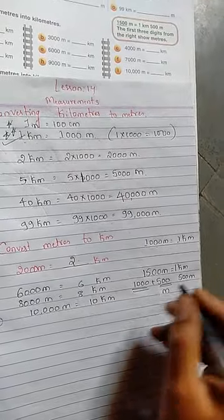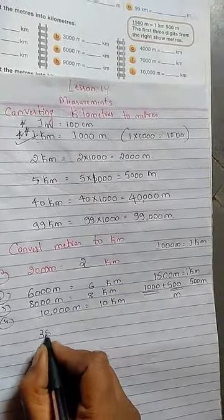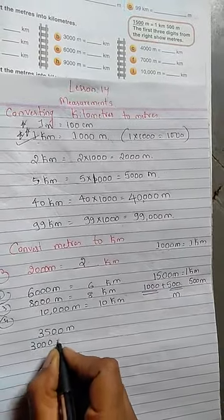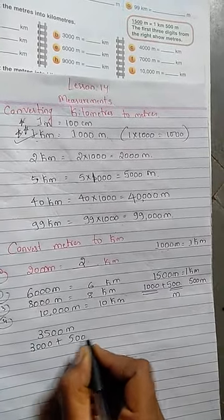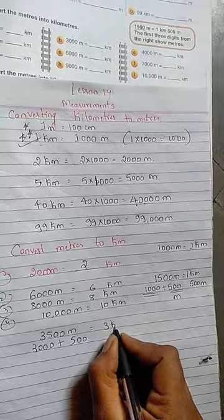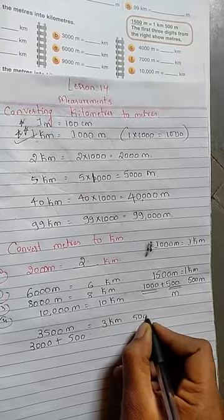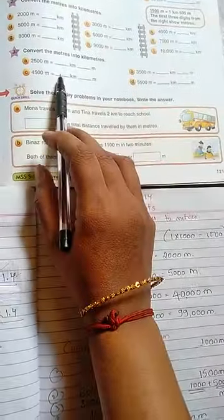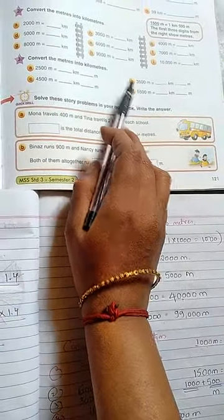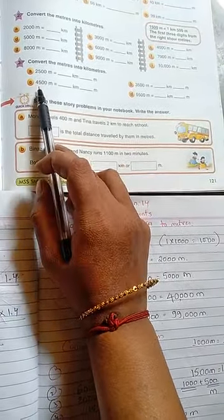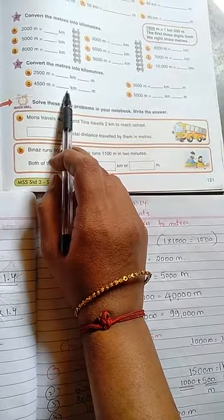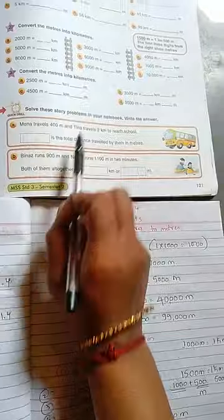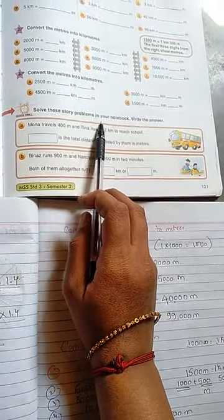If it is 3500 meters, we can split it as 3000 plus 500, so it will become 3 kilometers 500 meters. Similarly, 4000 means 4 kilometers, and 500 is meters — so you write 4 kilometers 500 meters. Solve the story problems in your notebook and write the answers.